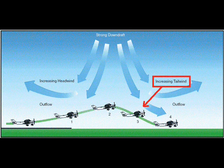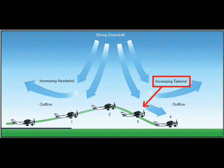In position 3, the tailwind will increase and the performance of the aircraft will decrease.